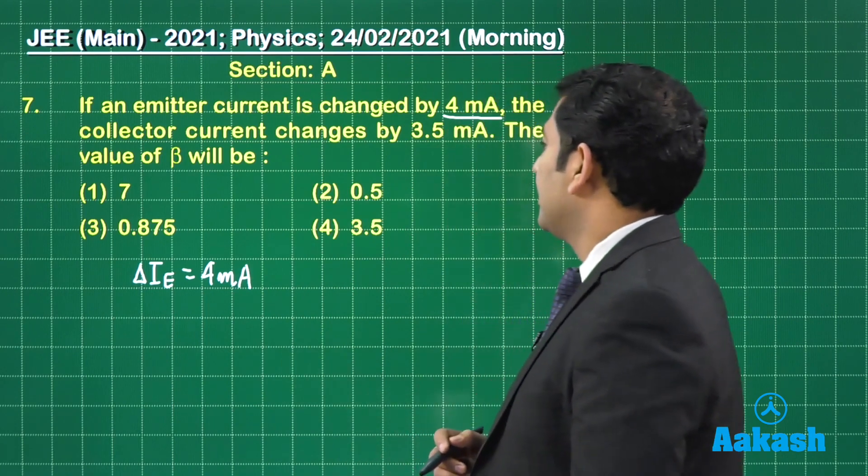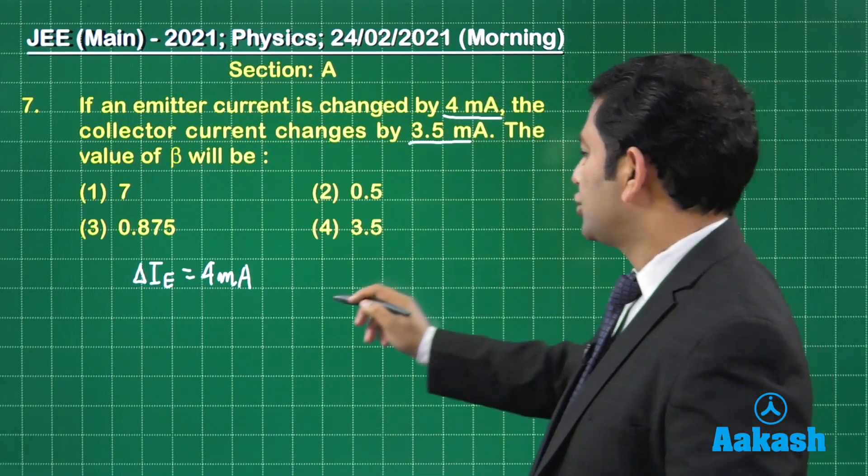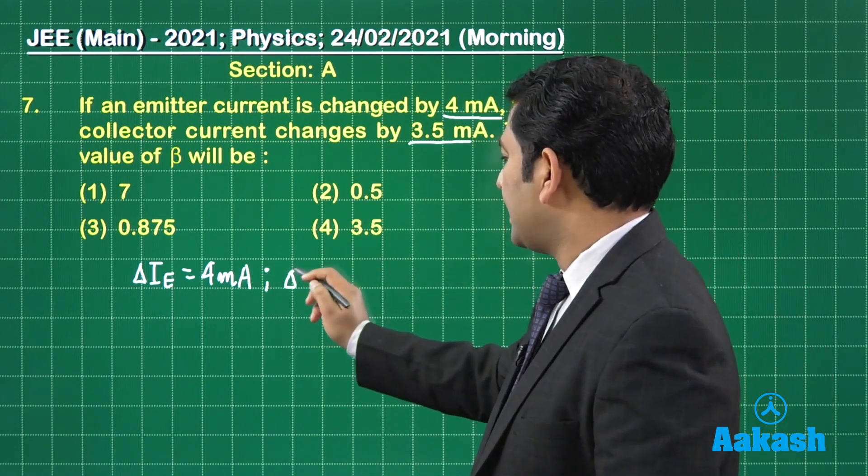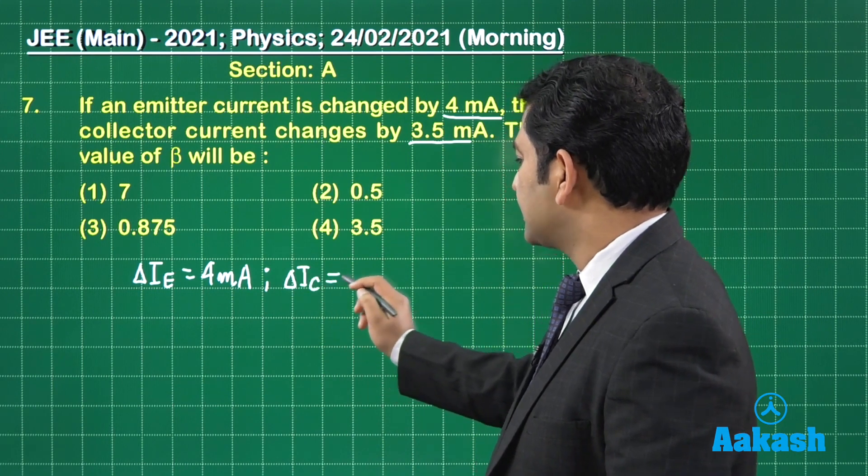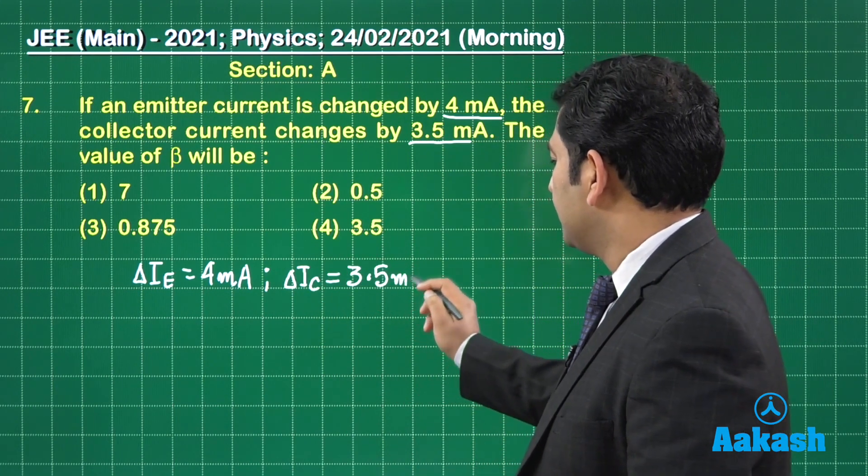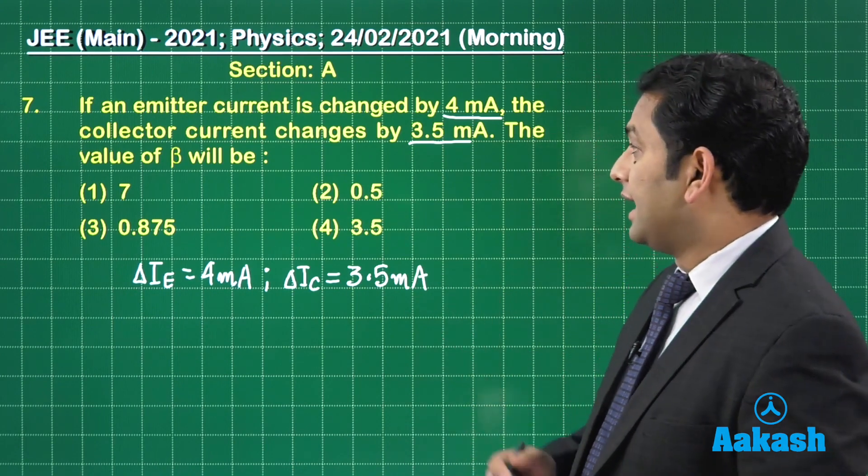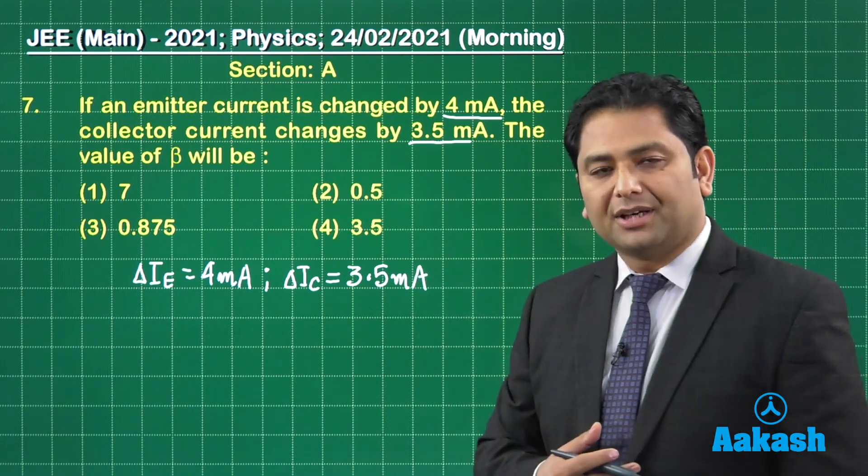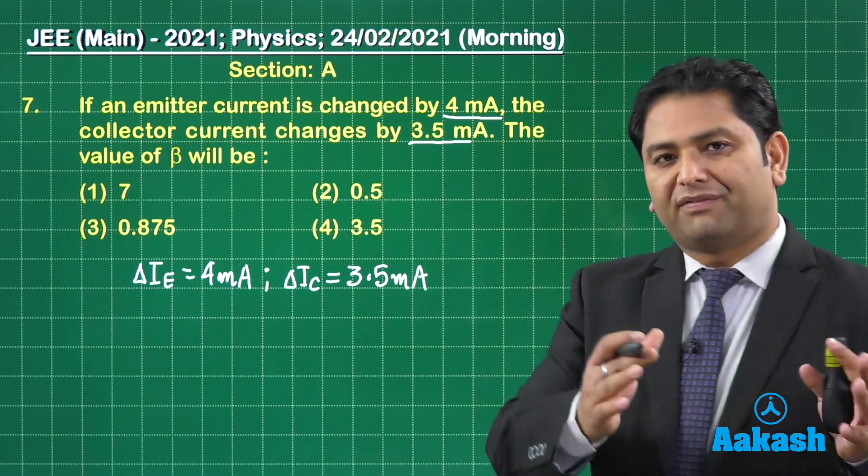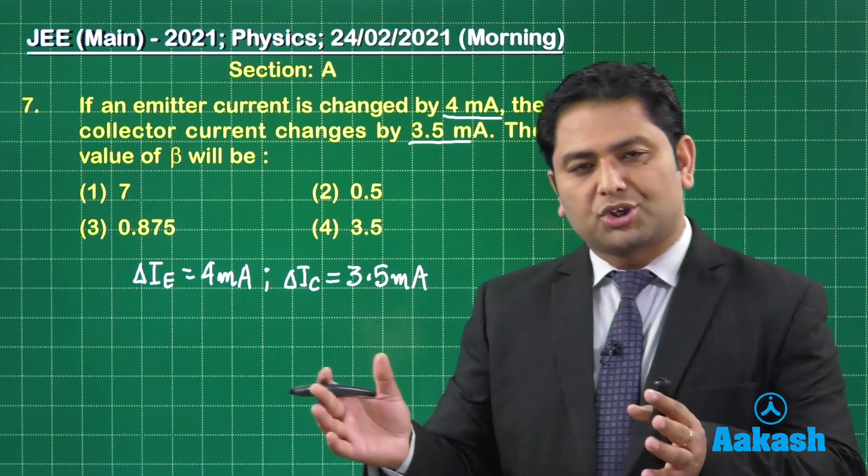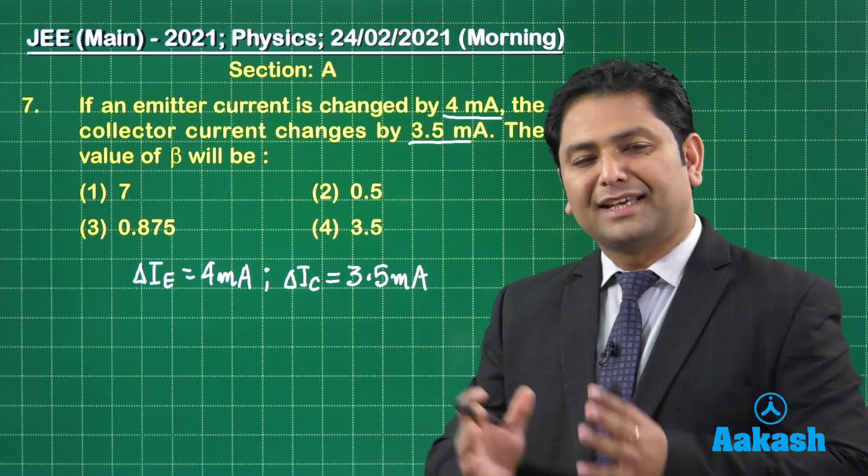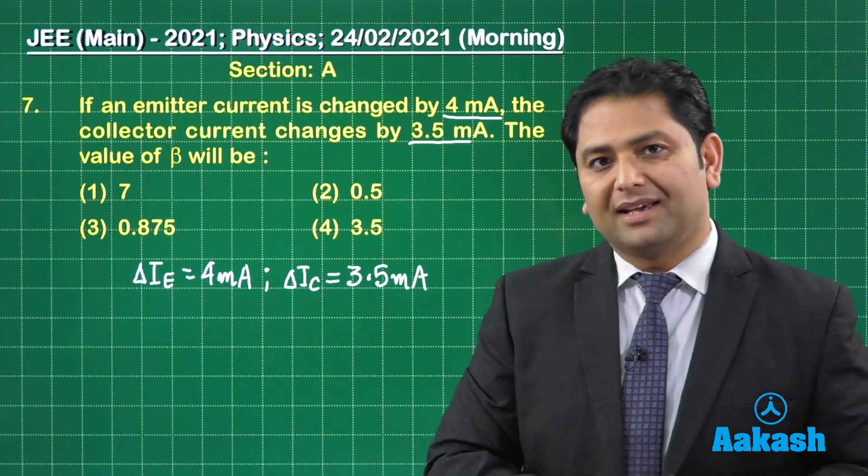The collector current changes by 3.5, so delta IC equals 3.5 milliampere. I need to find the value of beta. How would we define beta? That's a ratio of delta IC by delta IB.